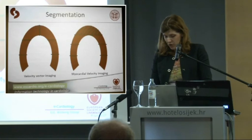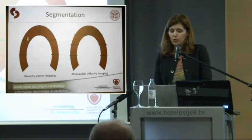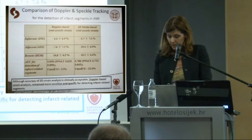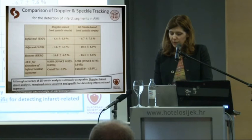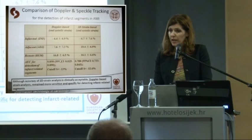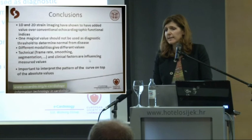Segmentation also matters. Velocity vector imaging provides true segmentation of the ventricle, while myocardial velocity imaging does not give true AHA segmentation data. If you want to detect infarct-related segments, the Doppler-based strain modality is preferable, because data from infarct segments are more distinct, and remote and ejector segments are much more clearly differentiated compared to 2D strain data.